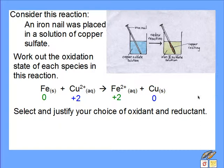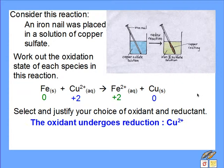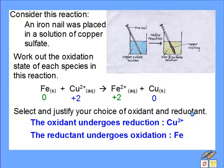This means we can link this to which species is the oxidant and which is the reductant. Remember, the oxidant undergoes reduction itself, so that must be the copper ion Cu2+. And the reductant must be undergoing oxidation — so that is the iron metal Fe. The oxidant is Cu2+ and the reductant is Fe.